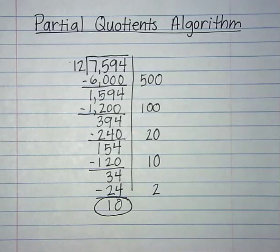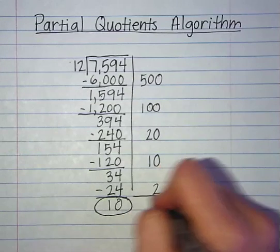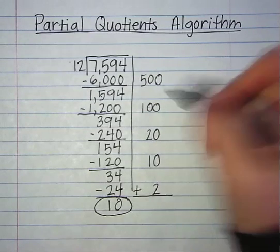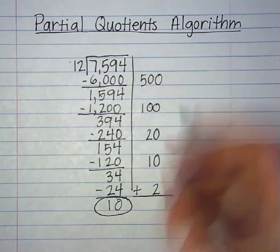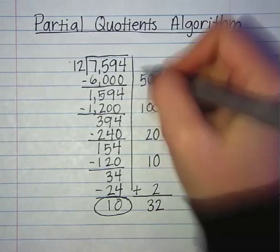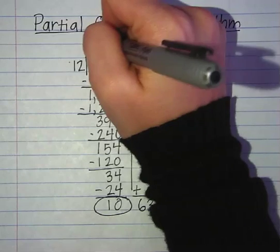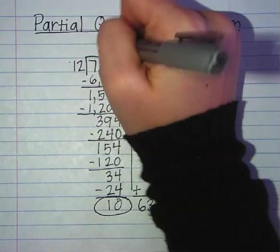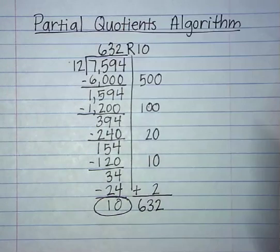I always circle the remainder so I don't forget about it. Now I'm left with all these partial quotients, and if I add them up they will give me my quotient, which is my answer. So I add up 500 plus 100 plus 20 plus 10 plus 2. Starting in the ones column: that gives me 632. I always write it back up at the top — 632 with a remainder of 10. And that is how you do the partial quotients algorithm.